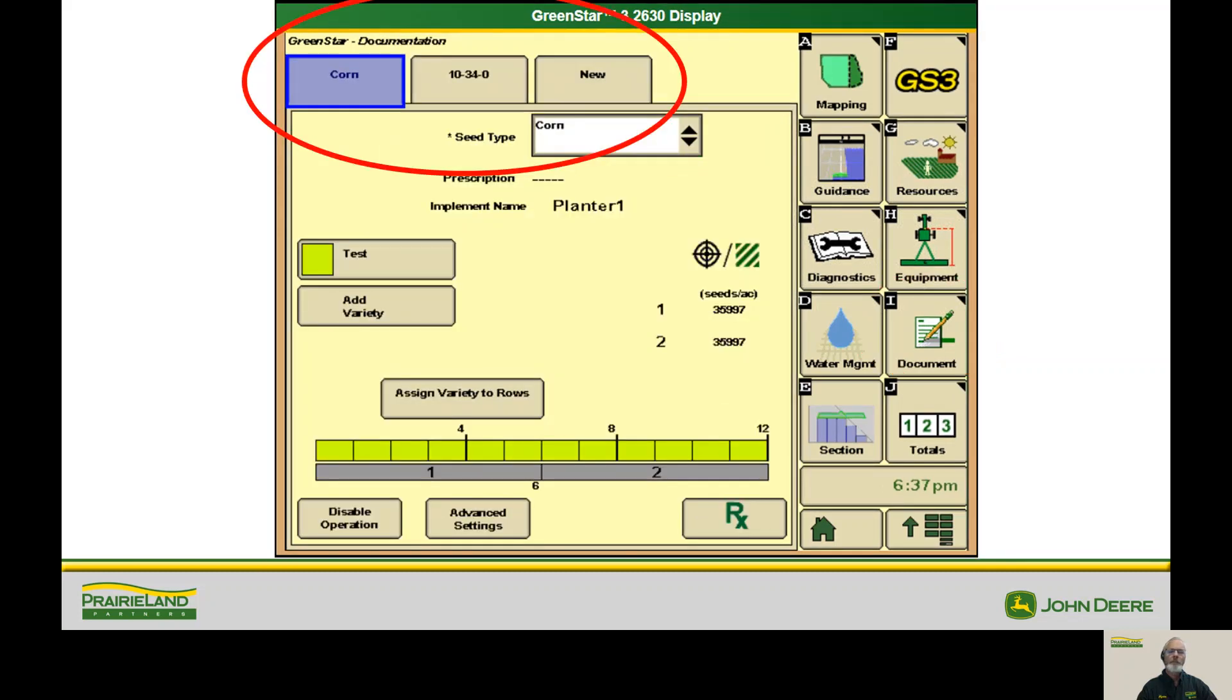So we'll look at the top here and we have corn and 1034-0. We have two products that we are documenting. One of them is through the planter and the other could be just a straight rate. But I want to make sure that we fill things in here. Seed type. You might take a note here. Anytime you see a little dot to the left of the title, that's a required bit of information that needs to happen in order to get documentation to happen correctly.